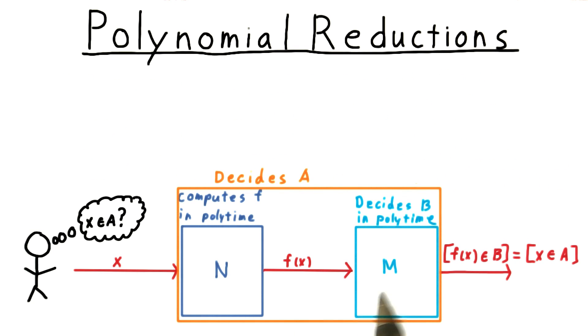Therefore, the composition of M with N is a decider for A, by all the same arguments we used in the context of computability. But is it a polynomial decider?